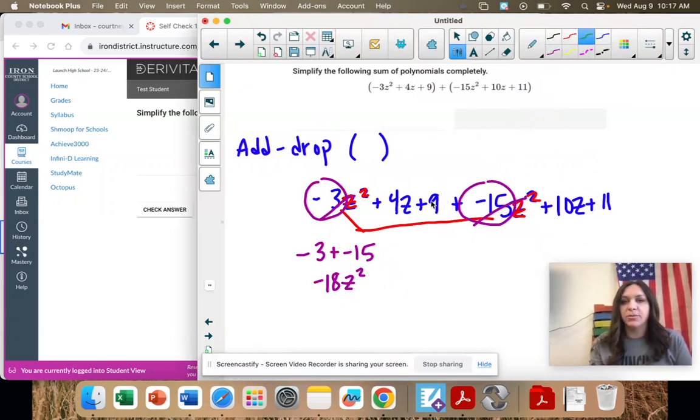Now our next like term is just the z. So these two terms that just have z, those are like terms. And we just take the coefficient, 4 plus 10. 14. And then the z just comes along.